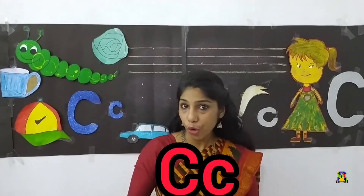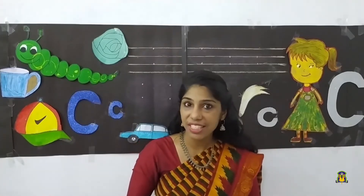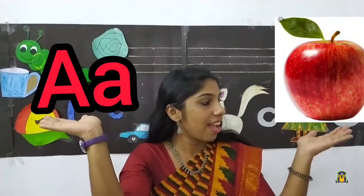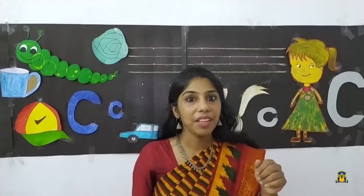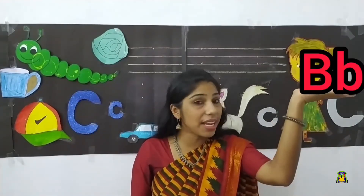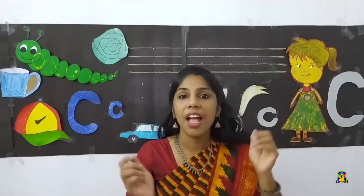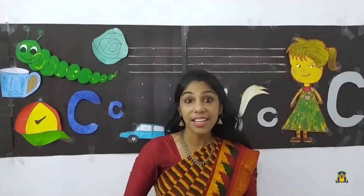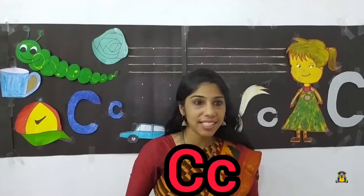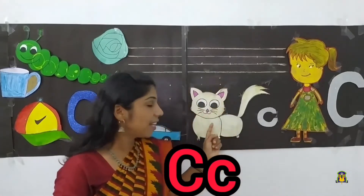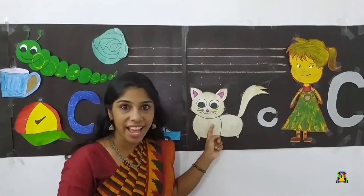Before going for writing, let's revise the letters. A says an apple. Then B. B says B, board.